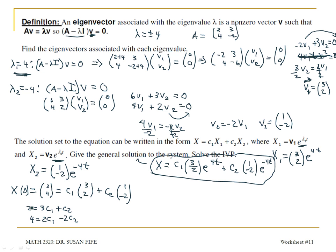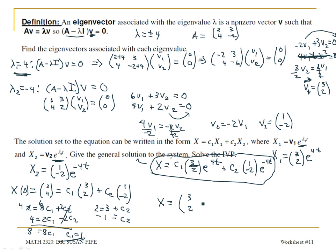Multiplying the first equation by 2 so that the c2 terms drop out: adding gives 8 c1 equals 8, so c1 equals 1. Substituting back: 2 equals 3 times 1 plus c2, so c2 equals negative 1. The solution to the initial value problem is x equals the vector (3, 2) e to the 4t minus the vector (1, negative 2) e to the negative 4t.